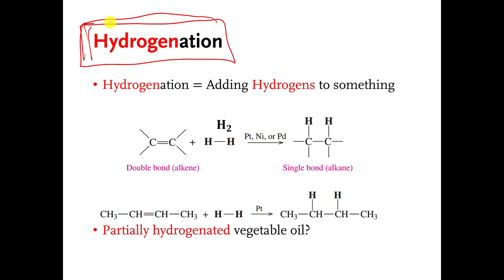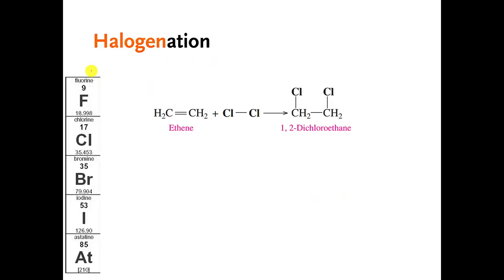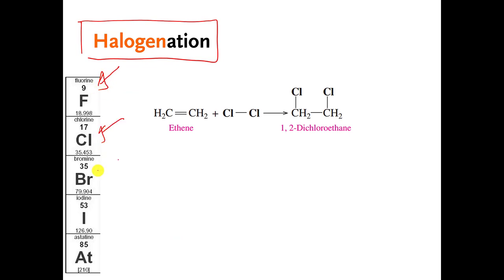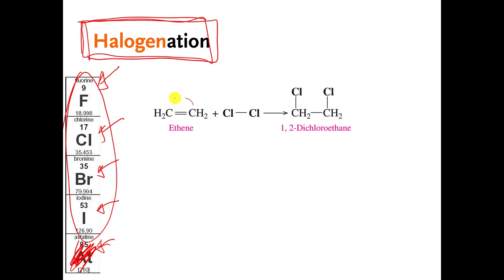So this is one example of an addition reaction. The next kind of addition reaction is called halogenation. These atoms here are in the 17th column of the periodic table. One of them is unstable — you're never really going to see that one. The others are called halogens. If you break a carbon-carbon double bond and you end up putting any of these kinds of atoms onto the carbons, that is called a halogenation reaction.